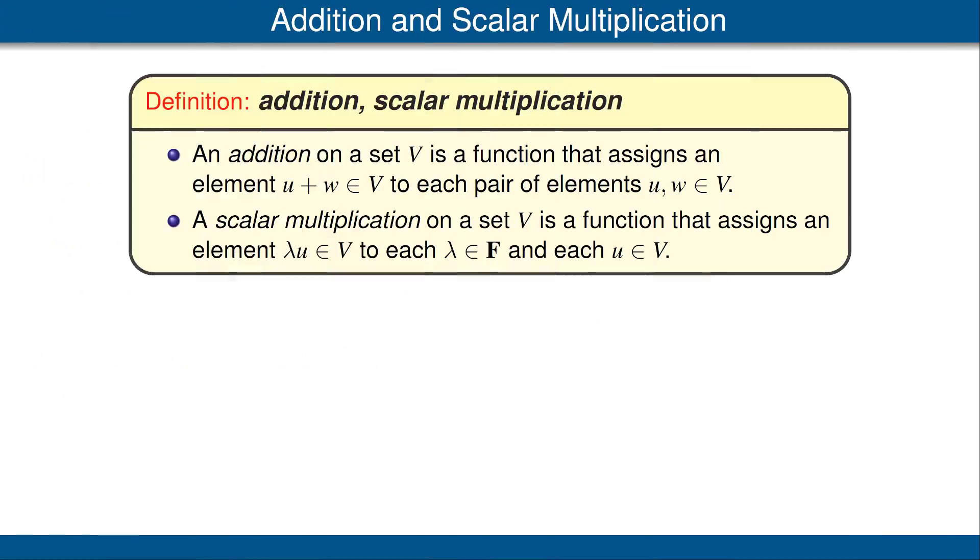We need to define what we mean by an addition and by a scalar multiplication on a set V. By an addition on a set V, we mean a function that assigns an element u + w in V to each pair of elements u, w in V. By a scalar multiplication on a set V, we mean a function that assigns an element λu in V to each λ in F, our scalar field, and each element u in V.